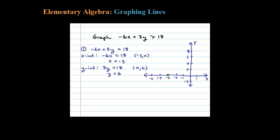And the y-intercept here at 0 comma 6. Notice the original inequality is a strict inequality, so I'm going to use a dotted line for the boundary, indicating that the ordered pairs on the line are not going to be part of the solution set. Step number two is to test an ordered pair.